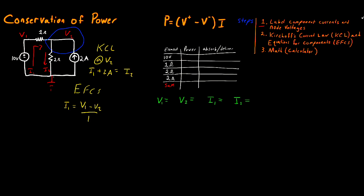For I2 and the 2 ohm resistor: I2 is equal to V2 minus 0 (our ground node) divided by 2 ohms. For the voltage source, the equation is that the potential across it equals the positive side minus the negative side, so 10 equals V1 minus 0. The 2 amp source has already been taken care of — we've included its information in the KCL statement: I1 plus 2 amps equals I2. We don't know the voltage across the current source; we just know the current through it, which is captured in the KCL equation.